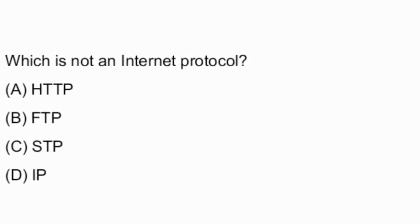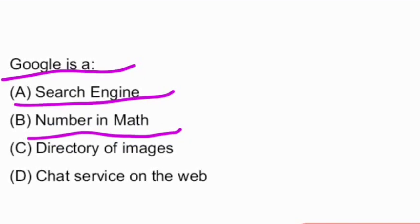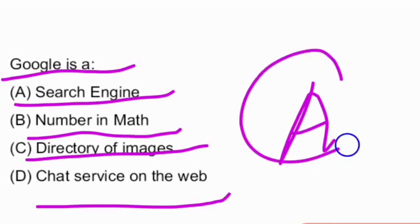Next question: Google is a — options are: search engine, number in map, directory of images, chart service on the web. And the answer is option A — search engine.